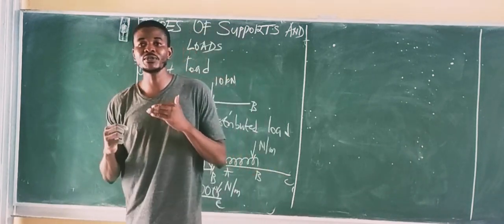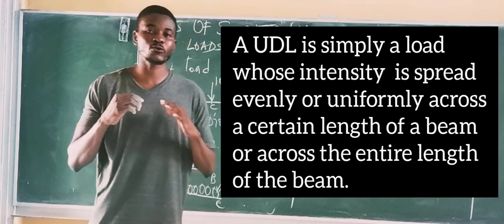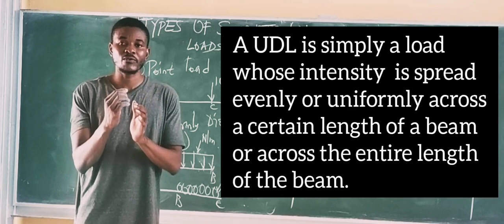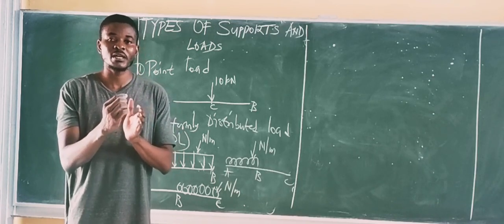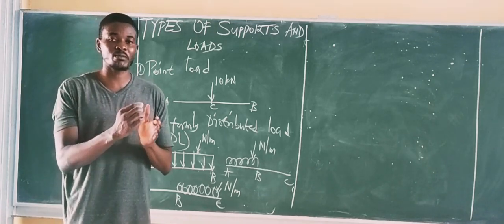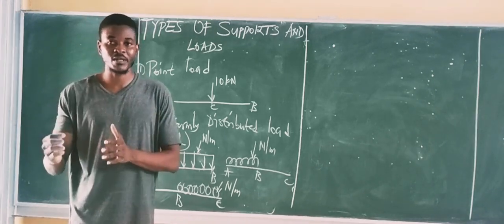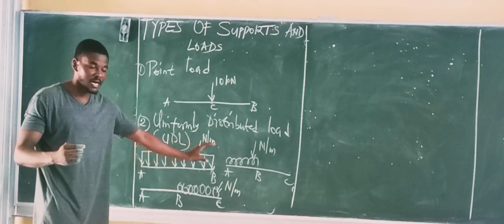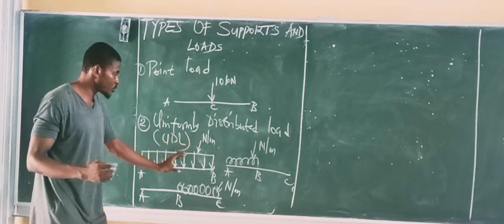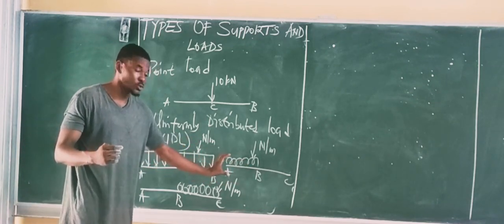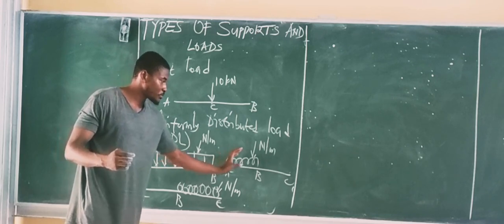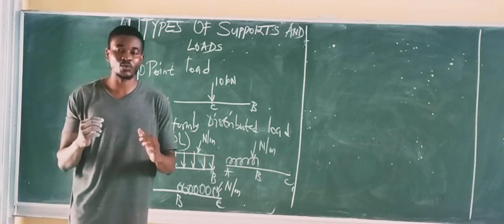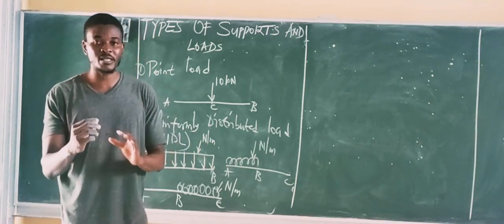A UDL is simply a type of load whose intensity spreads uniformly from one portion of the beam across to another portion, or across the entire length of the beam. In one case, the UDL spreads from the beginning to the end of the beam. In another case, it spreads from one starting portion to another portion, but the intensity remains the same — that is why it is called a uniformly distributed load.